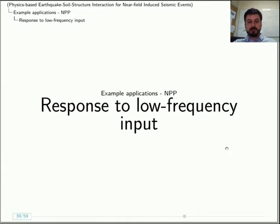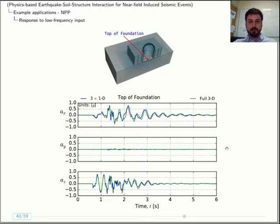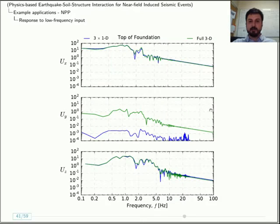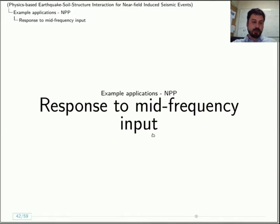If we excite this model with low frequency input, what you see is that for low frequencies, the plane wave assumption shown in blue tends to match the full 3D wave assumption shown in green, both in the time domain as well as in the frequency domain, if you look at the top and bottom most graphs. The middle one is not significant because there's a symmetry about the XY plane.